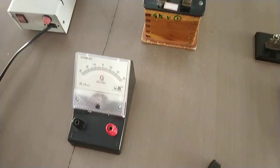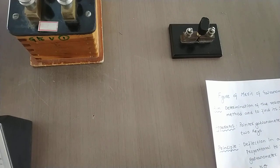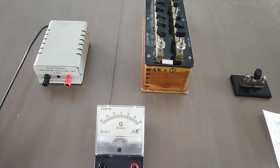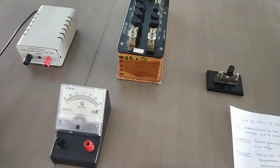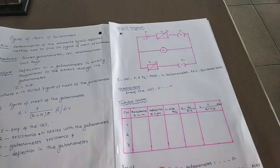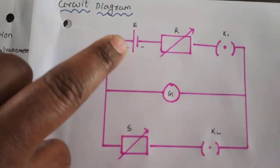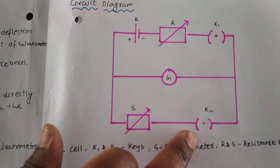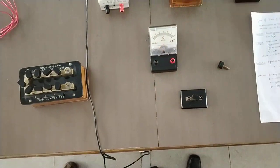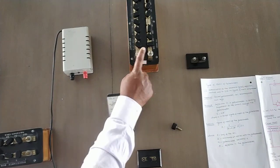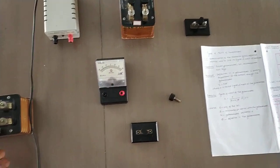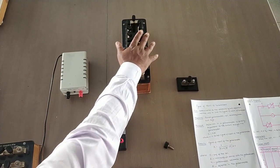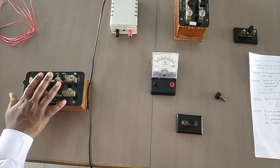You can see these are the instruments required for the experiment. Place the instruments according to the circuit diagram. You have the cell, followed by the resistance box, then the plug key, in between the galvanometer, then one more resistance box and one more plug key. This one you choose as capital R, which has a higher range, and this one you choose as S, which has a shorter range.